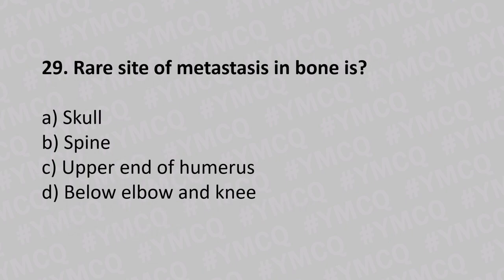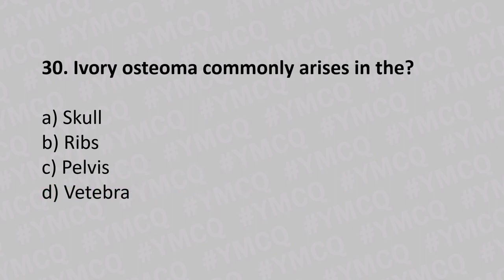Question number twenty-nine: rare site of metastasis in bone is option A skull, option B spine, option C upper end of the humerus, option D below the elbow and the knee. The answer is option D, below the elbow and the knee.